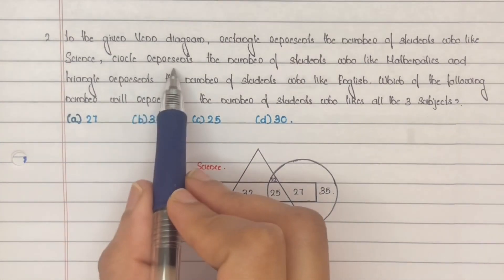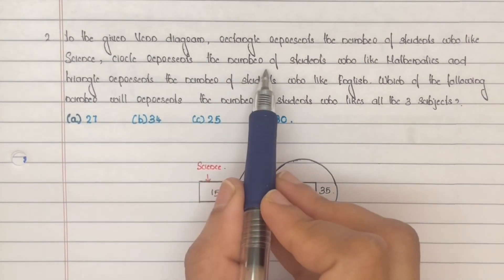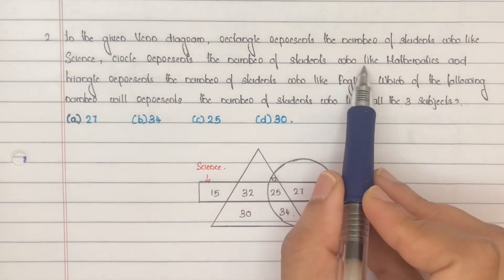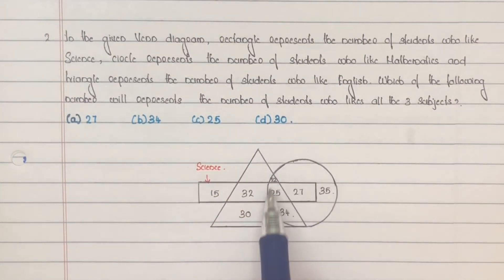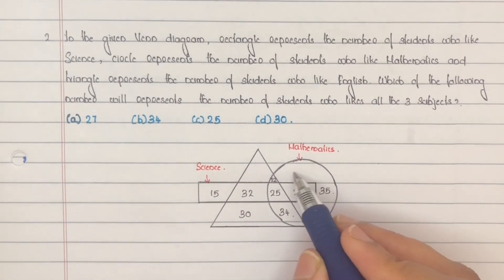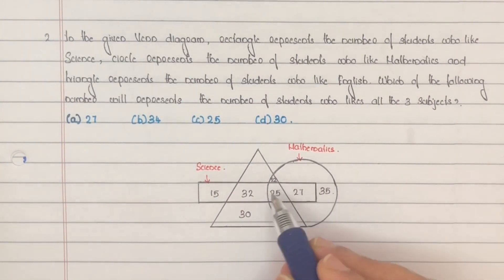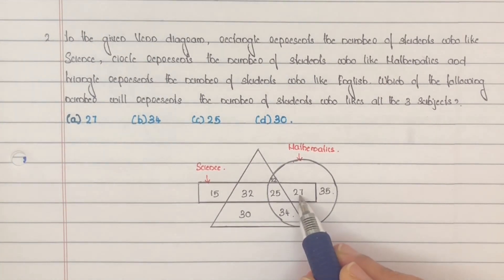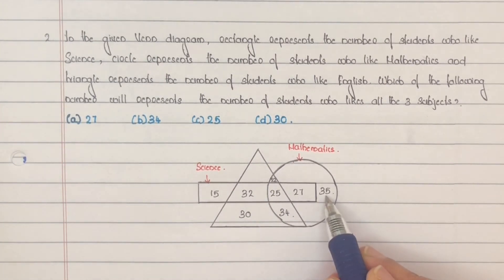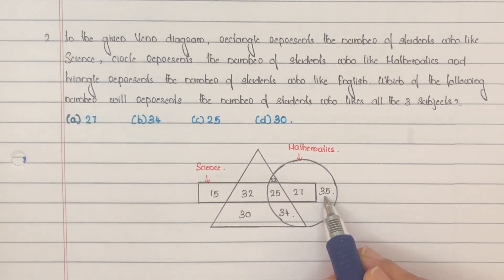Next, the circle represents the number of students who like mathematics. The circular portion includes 22 plus 25 plus 34 plus 27 plus 35 students who like mathematics.